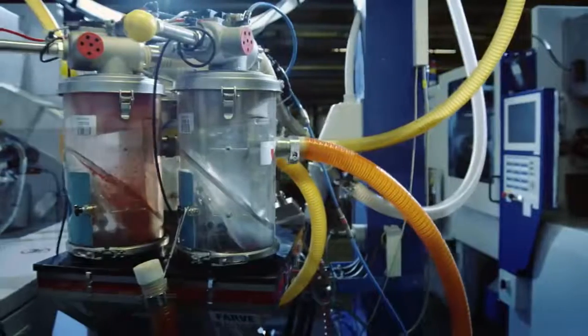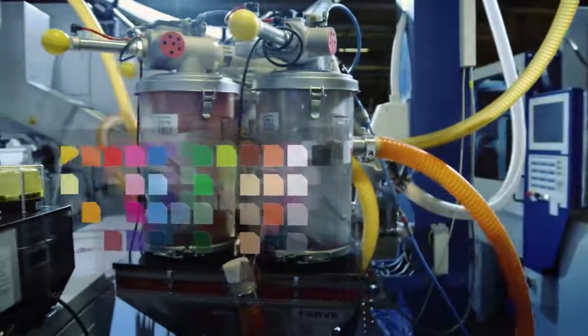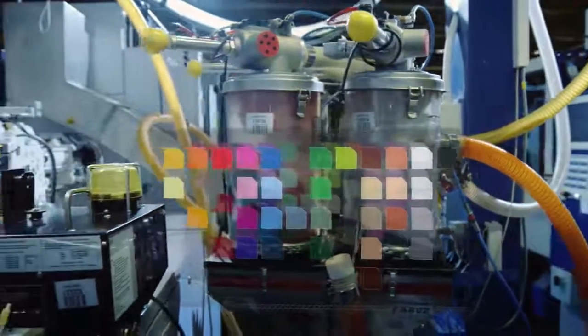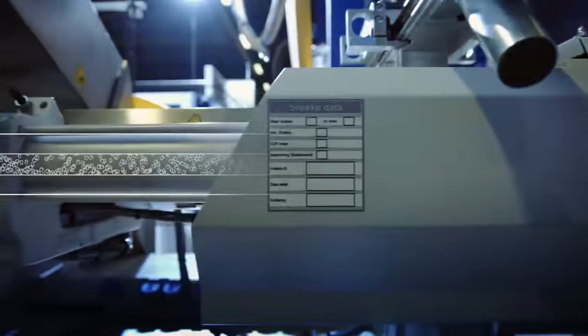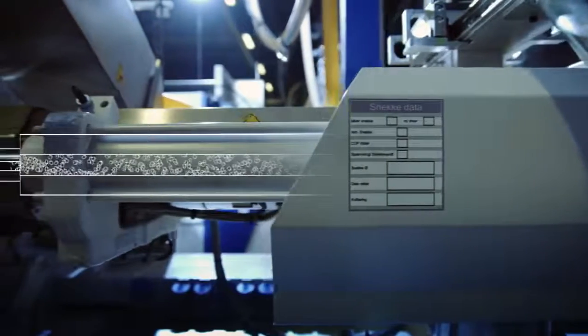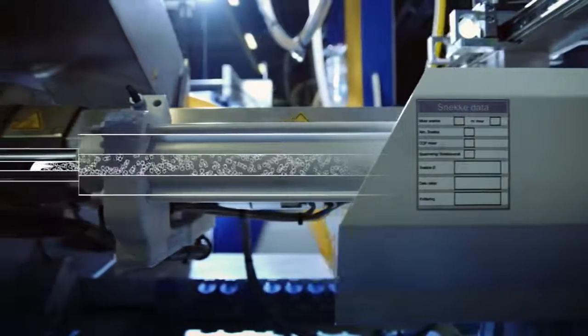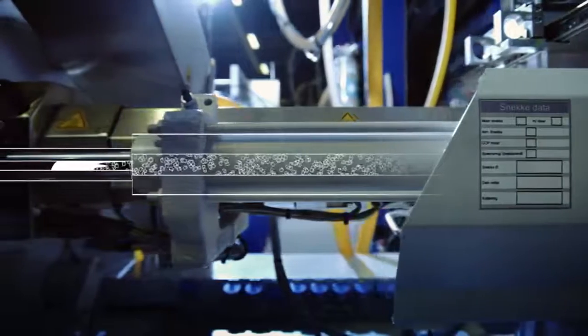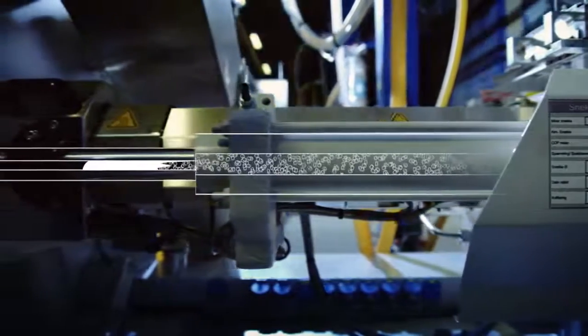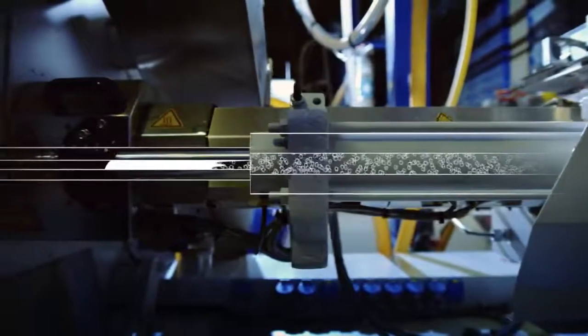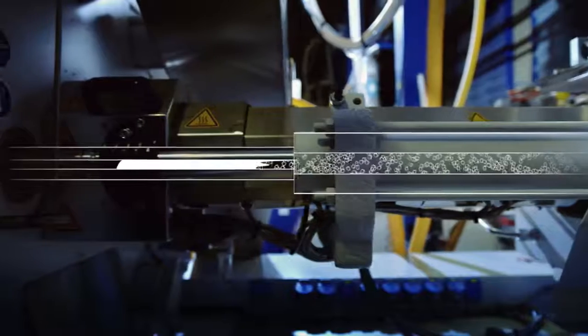First, the raw granulate is mixed with the dye. Bricks are currently produced in over 50 different colors. The colored granulate is then led into the molding machine. Within no time, the granulate is heated to between 230 and 310 degrees Celsius. The plastic melts into a texture much like toothpaste.